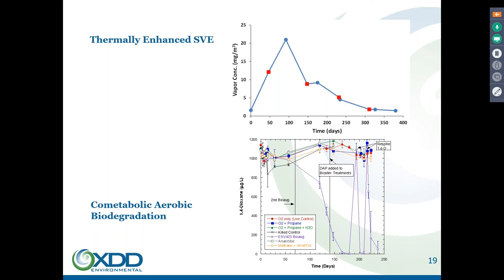At this particular site, the vapor concentration was very low because of the low Henry's coefficient and low volatility. The thermal enhancement increased it, and it then decayed as you would expect from any soil vapor extraction system. It was effective at removing the 1,4-Dioxane from the subsurface.